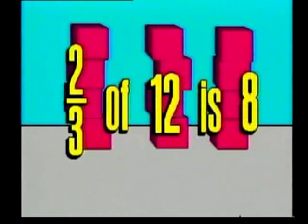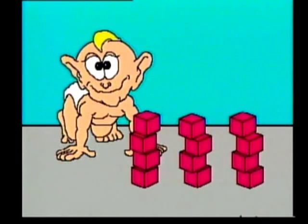The numerator, two, tells us that Leon needs only two of these stacks of four. That's eight blocks. Two thirds of twelve equals eight. Okay Leon, go ahead and build your castle.